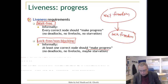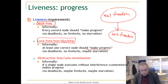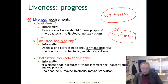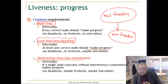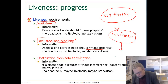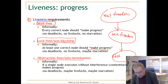One last, weaker property of liveness is called obstruction-freedom. Obstruction-freedom says basically that if a single node executes without interference from others, then it will make progress.